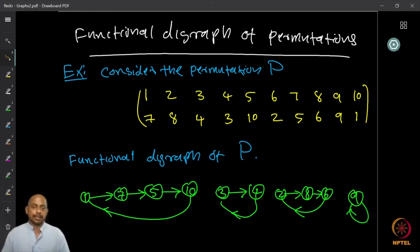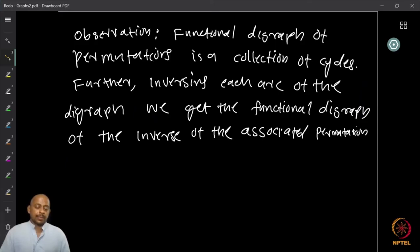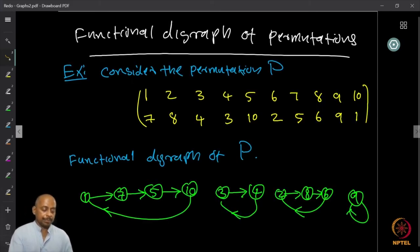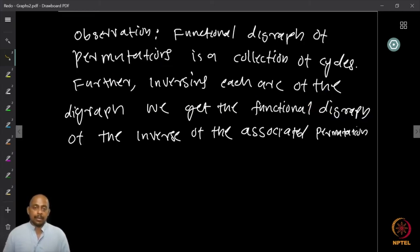The functional digraph of a permutation is a collection of cycles — this is an observation you can make immediately. Furthermore, if you reverse each arc of the digraph, you get the functional digraph of the inverse permutation. For example, if the permutation maps 1→10→5→7→1, reversing gives the inverse function's functional digraph.